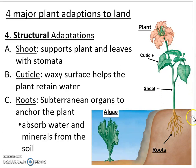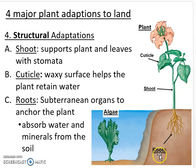Algae have a very primitive version of a root known as a holdfast. The root structure evolved to anchor the plant, but also your roots are going to be able to absorb water and minerals from the soil. It's really important to remember that as the fungi evolved with these plants, that's where we see mycorrhizae — fungi that actually grow into the root structure and increase the availability of minerals and water. The plant gives the fungus sugars and the fungus increases transport of nutrients and water, so both organisms benefit from that symbiotic relationship.